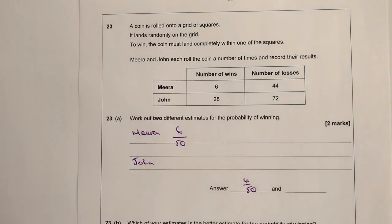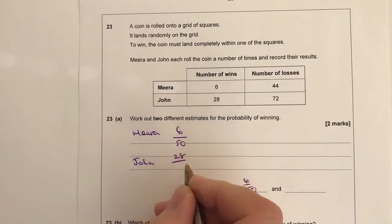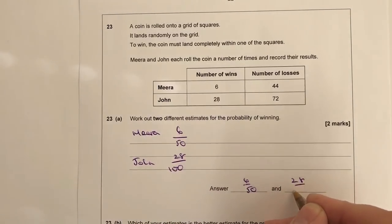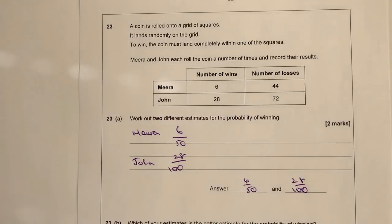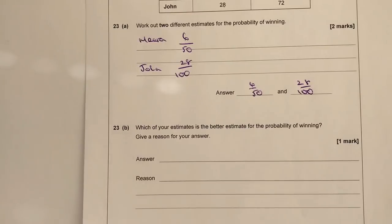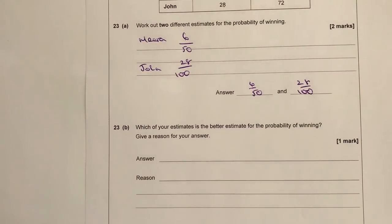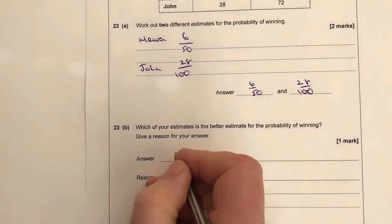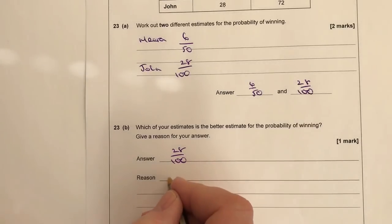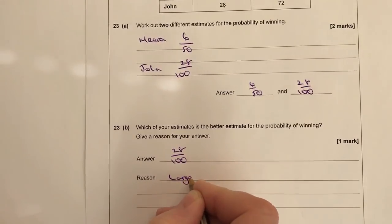It's kind of more meaningful to leave it as you've written it. So in John's case, he's won 28 but he's actually rolled 100 times. So another estimation of probability of winning would be 28 out of 100 for John. And then it says which of your estimates is a better estimate for the probability of winning? Well, it's better to use this one mainly because John's rolled twice as often as Mira has.